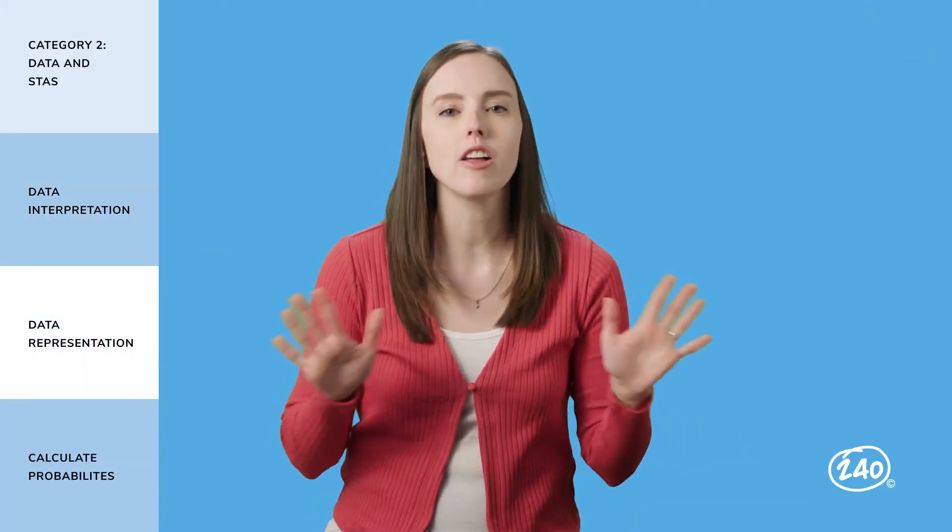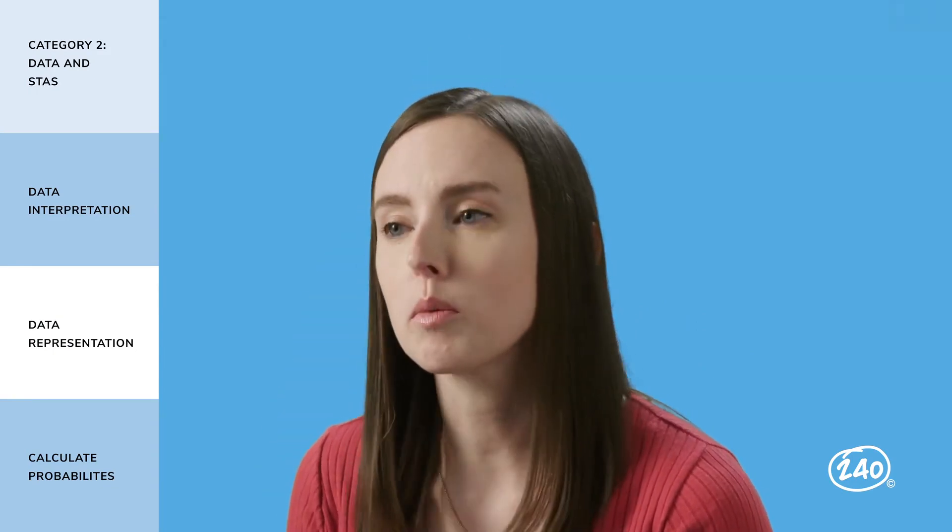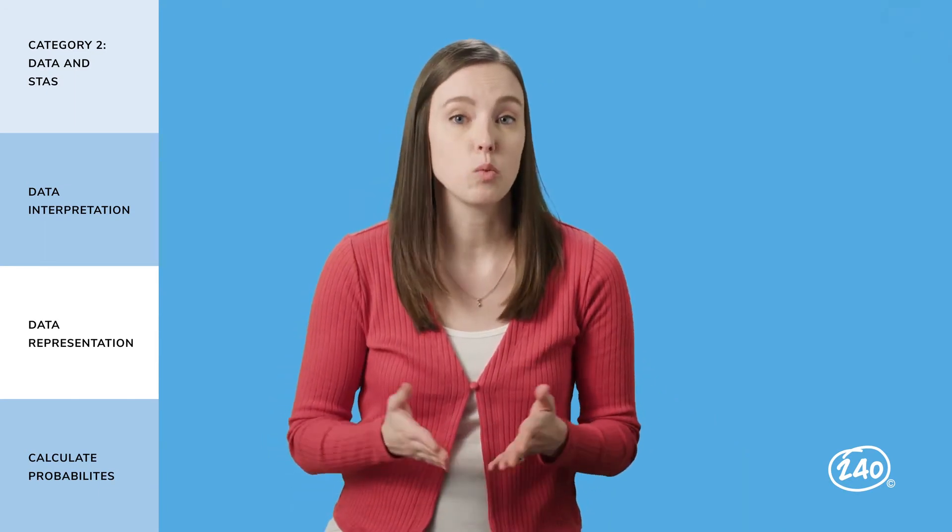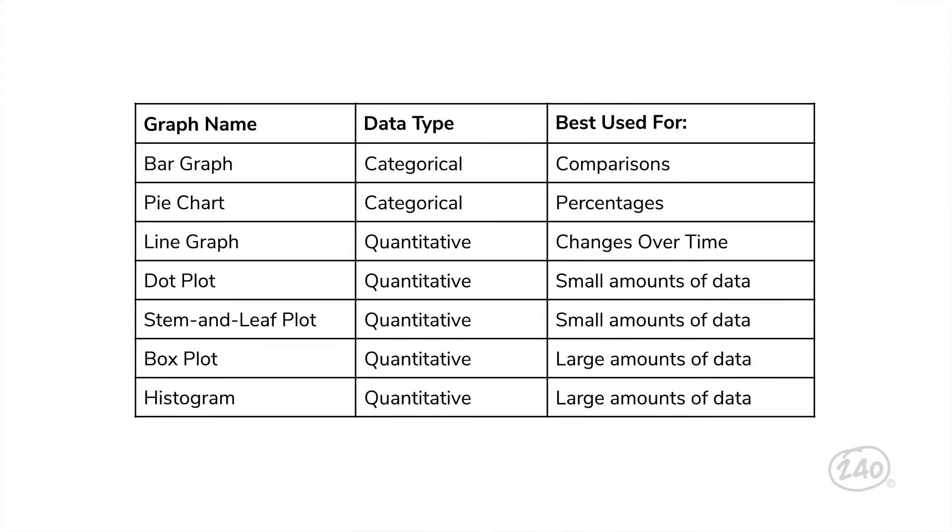Let's check out how you'll represent all that data you just interpreted. You are going to need to know how to represent data in a graph or plot. You might be given a data set and asked which graph or plot would be best used to represent the data. Here's a list of common graphs and plots, along with the type of data they best represent. If you're working with categorical data, choose a bar graph or pie chart. If you're working with quantitative data, you've got some more options. Line graphs track changes over time. Dot plots and stem and leaf plots are best with small data sets, and box plots and histograms are better with large data sets. I know that's a lot to remember, but we've got tons of opportunities for you to practice it in our 240 study guide.